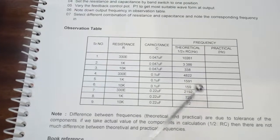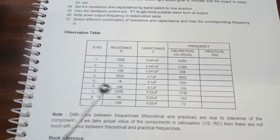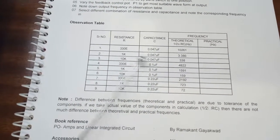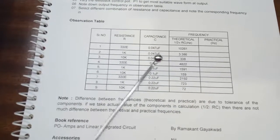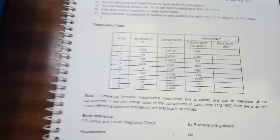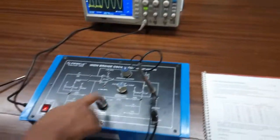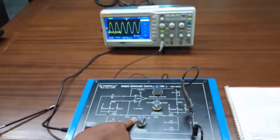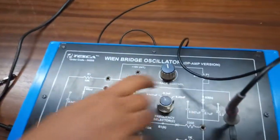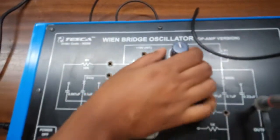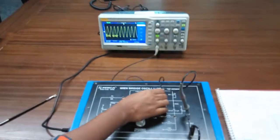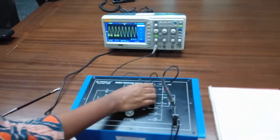We will take this combination and see the frequency in our practical experience and compare with the theoretical value. For this, first select this resistor at 330 ohms and we will select the capacitor at 0.047 microfarads. Now vary this potentiometer to get the most clean output waveform.